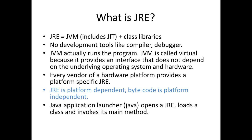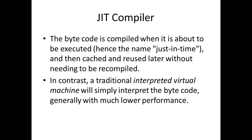Every vendor of a hardware platform provides a platform-specific JRE. Sun provides a JRE for Solaris, Microsoft provides a JRE specific to Windows, and Apple provides a JRE for Macintosh. The JRE is platform dependent, but the bytecode is platform independent. Once you compile your source code into bytecode, you can run it on any platform that has a JRE. The Java application launcher (java) opens a JRE, loads the class file, and invokes its main method.